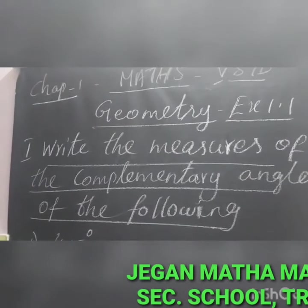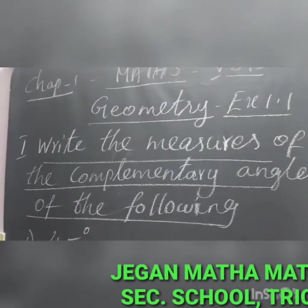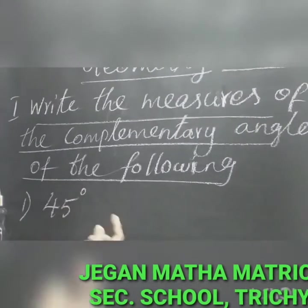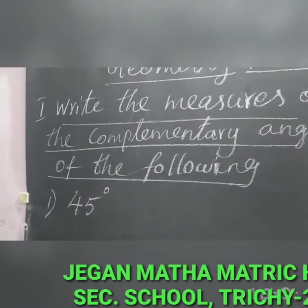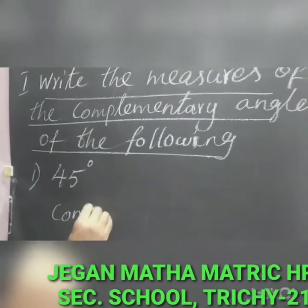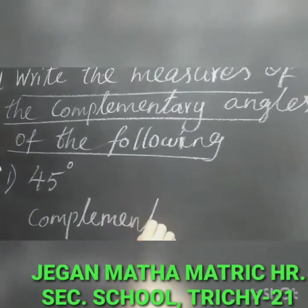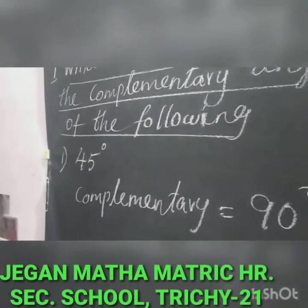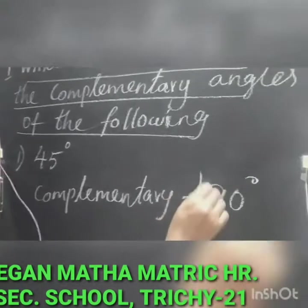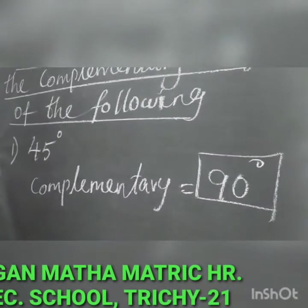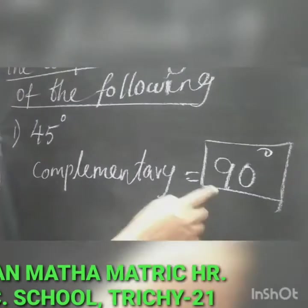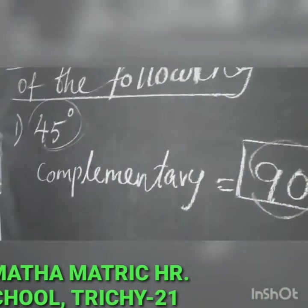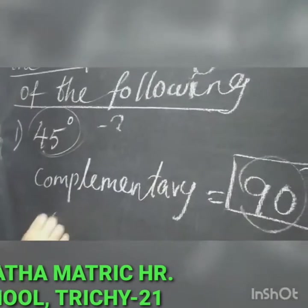First, see the heading: write the measures of the complementary angles of the following. The first one is 45 degrees. You have to find the other angle. Complementary means the sum of the two angles equals 90 degrees — that is called a pair of complementary angles. So the total is 90 degrees.